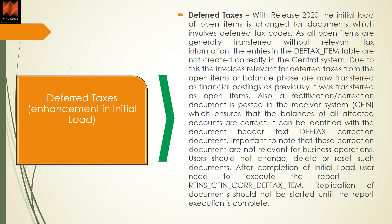Next is deferred tax. With release 2020, the initial load of open items is changed for documents which involve a deferred tax code. Up to 1909, documents were transferred without relevant tax information, and entries in the deferred tax and score item tables were not created correctly. Now, invoices relevant for deferred tax from open items or balances are transferred as a complete financial posting. The system also posts a correction document in CFIN itself for technical reasons — you should not try to change, delete, or reset such documents. After doing the initial load and before starting real-time replication, you need to execute the report RFIN_CFIN_CORE_DEFTAX_ITEM, which checks and does the final data update if anything is missing from the initial load.